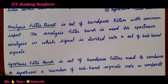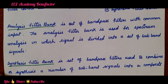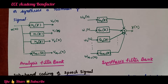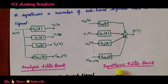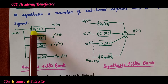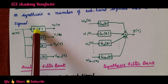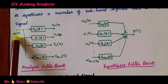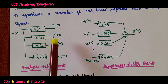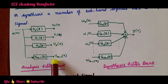The analysis filter bank is a set of band pass filters with a common input. Here you can see the analysis filter bank and the synthesis filter bank. The filters H0(z), H1(z), H2(z), and H(M-1)(z) are the transfer functions of the filters. An input signal is given and it is split into sub band signals V0(n), V1(n), V2(n), and V(M-1)(n).